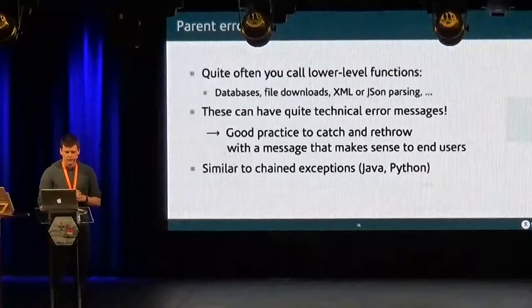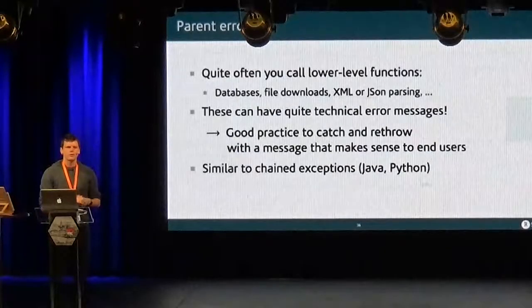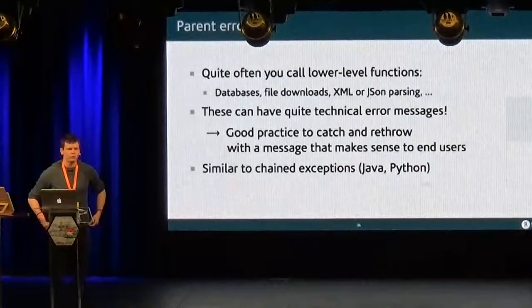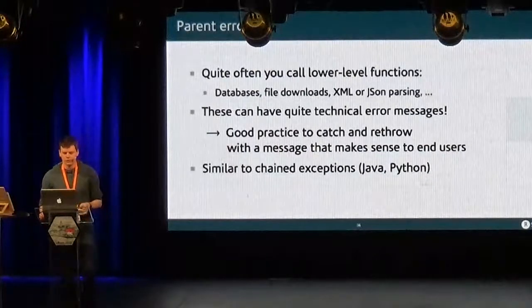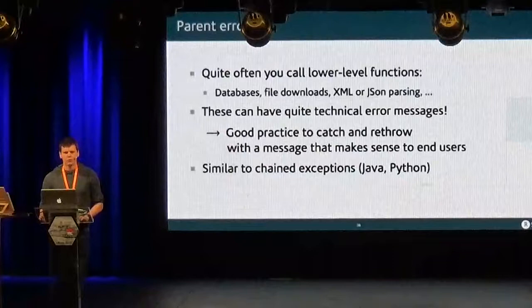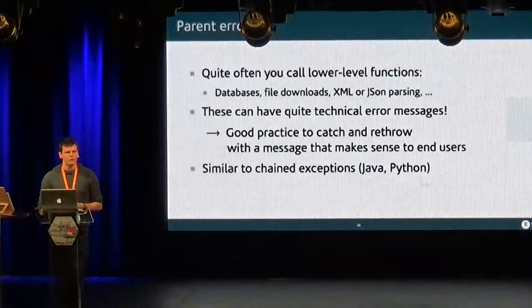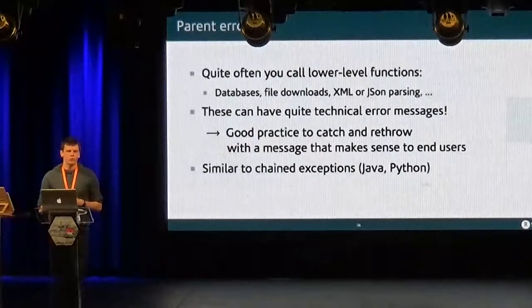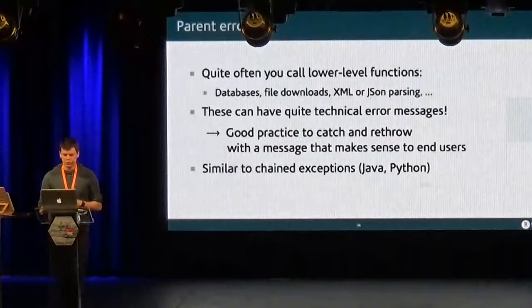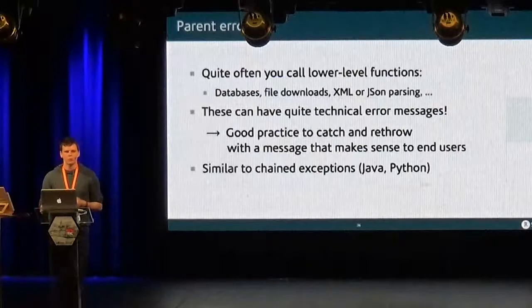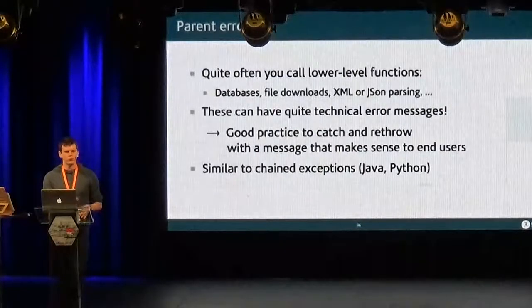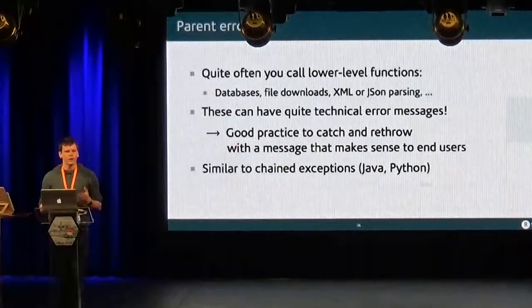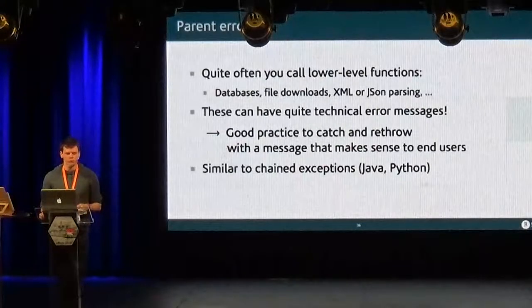So now parent errors. They are for the case that comes up often, where you call lower-level APIs, like, for example, if you want to access a database or download a file or parse some JSON. And these lower-level APIs, they tend to have quite technical error messages that will not mean much to your users. And so the idea comes from other languages. It's quite common in Java or Python to have chained exceptions. And the way it works is that when you call the lower-level function, you catch errors that it might throw, and then you re-throw them, but with a higher-level message and information that will make sense to your users.